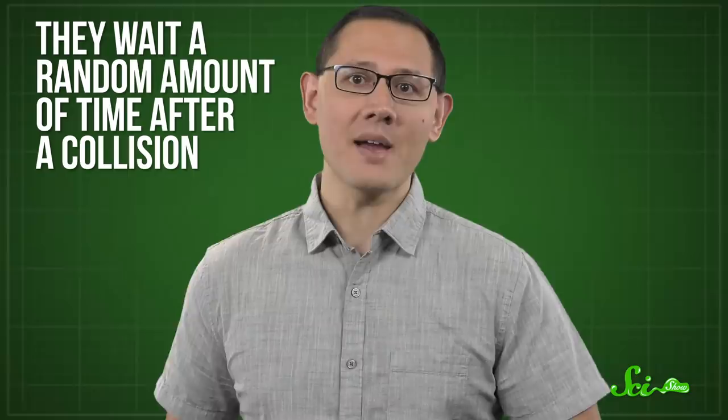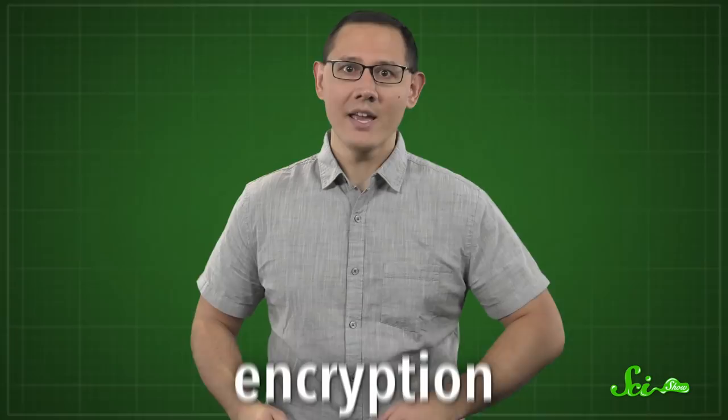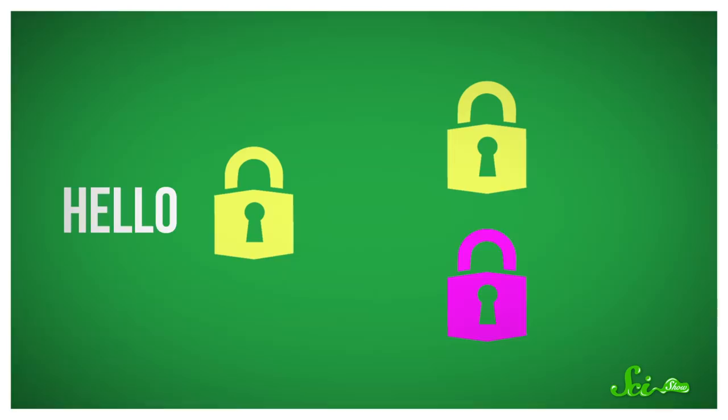But the most common use for randomness is both high stakes and very necessary—encryption, which requires secret data that an adversary can't predict. For example, every time you connect to a secure website, like an online banking portal, your computer and the server running the site have to agree on encryption keys. The keys are like a more sophisticated version of a secret decoder ring. Each computer can scramble its message so that only someone with the same key can decode it. Obviously, no one should be able to guess the secret key, or they'll be able to see your bank account information or even steal your money. So your computer and the server base the keys on random numbers to make them nearly impossible for your online nemesis to guess.